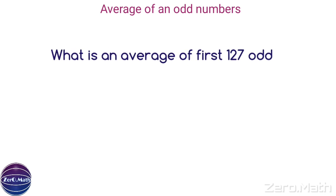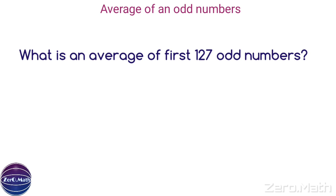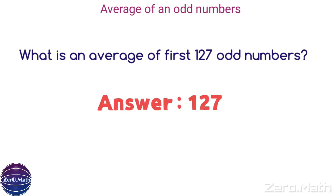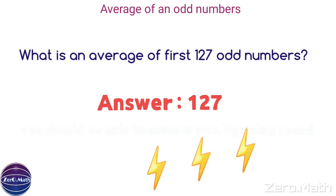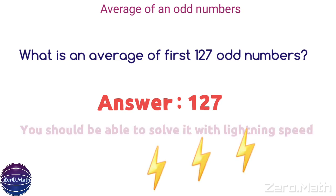Now tell me: what is the average of the first 127 odd numbers? The answer is 127. With lightning speed you should be able to answer that.